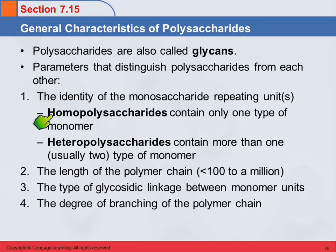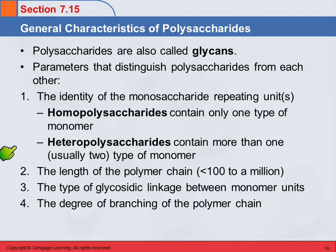We can have homopolysaccharides, in which case there's only one kind of monomer, or we can have heteropolysaccharides, which have more than one kind. You could have two monomers — that's the most common, two different sugars — or possibly three or four or more. So that's one thing that makes polysaccharides different from each other.